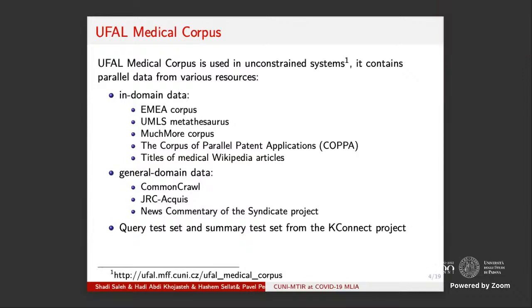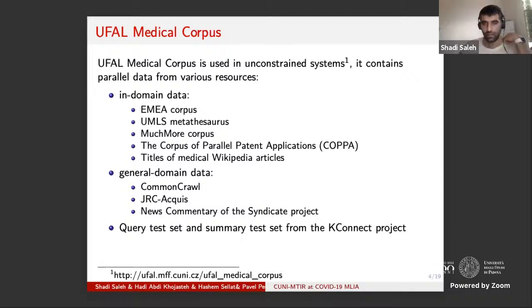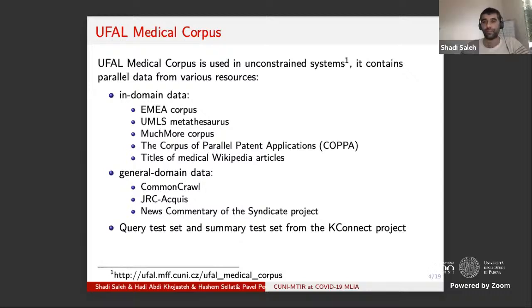Vasilis explains there are two dimensions: domain (coronavirus/health/medicine) and genre (news vs scientific paper). The corpus mostly contains everyday talk about COVID, not scientific content. This likely explains why WMT news-like data helped for e-translation while the more medically-specific UFAL corpus was less beneficial for this particular test set.